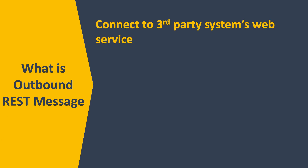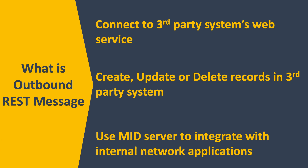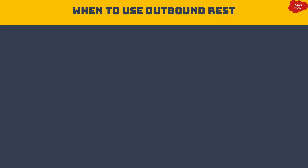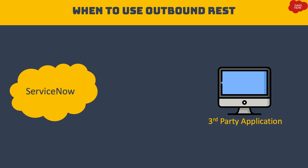Starting with what is outbound REST message: outbound REST message is a functionality of ServiceNow to connect with third-party applications to create, update, or delete records in those applications. Outbound REST message uses a MID server to send REST API calls to internal network applications. For example, if you have an application in your organization and you want to create or update records in that application from ServiceNow whenever a user or system performs some action, this can be achieved via sending an outbound REST message to that third-party application.